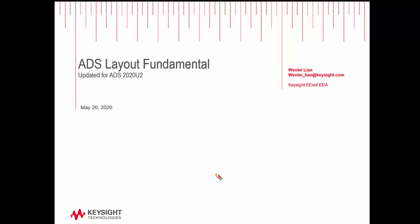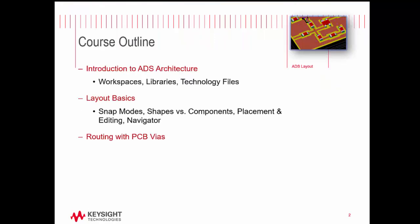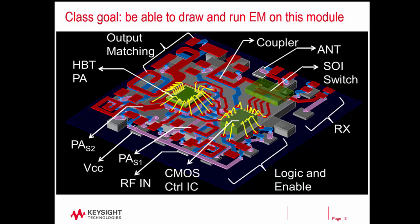Hi everybody. Today we're going to work on the ADS Layout Fundamental. The class is going to include three portions. The first one is Introduction to ADS Architecture. The second portion, we're going to have the hands-on layout basics. And the third one is going to cover routing with PCB VIA. Our class goal is to be able to draw and run an EM simulation on this module, so we need to have very good layout foundation skills.